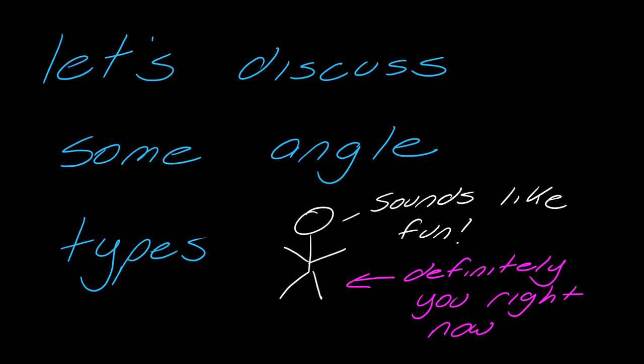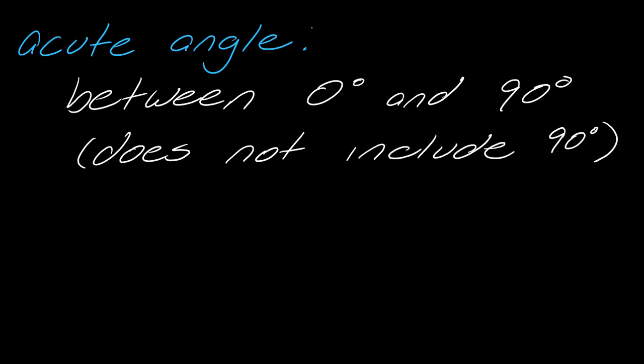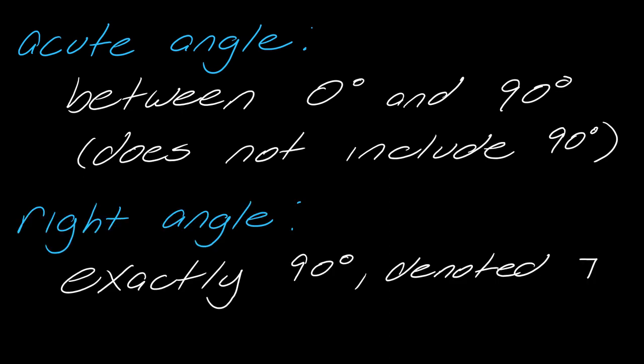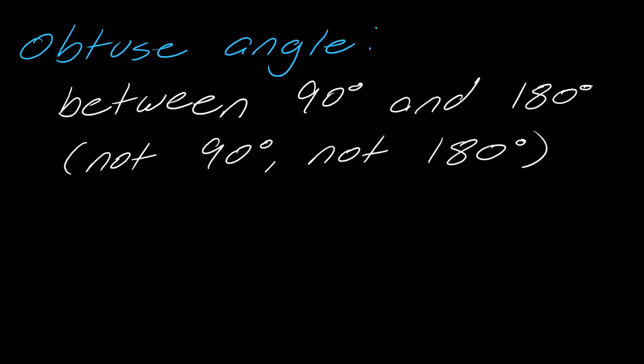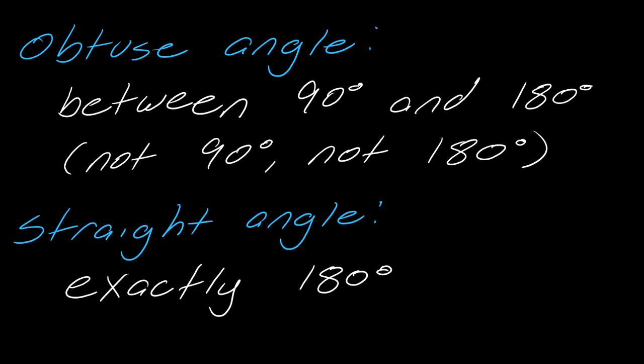So let's discuss some angle types. First things first, an acute angle is an angle that is between 0 and 90 degrees — it does not include 90. A right angle is an angle that is exactly 90 degrees, and it's usually denoted with a small square symbol — you might remember that from geometry. An obtuse angle is between 90 degrees and 180 degrees. And then a straight angle is exactly 180 degrees, so that would just look like a line.